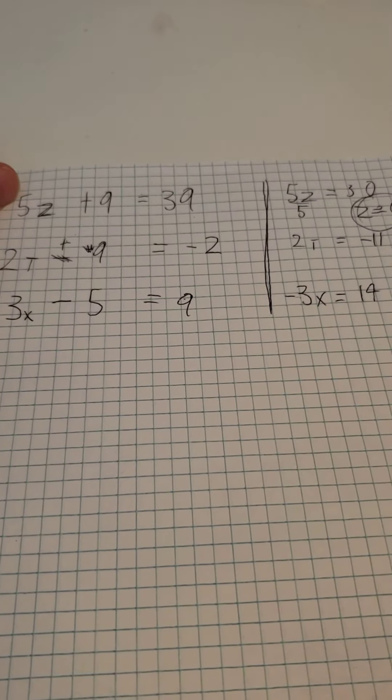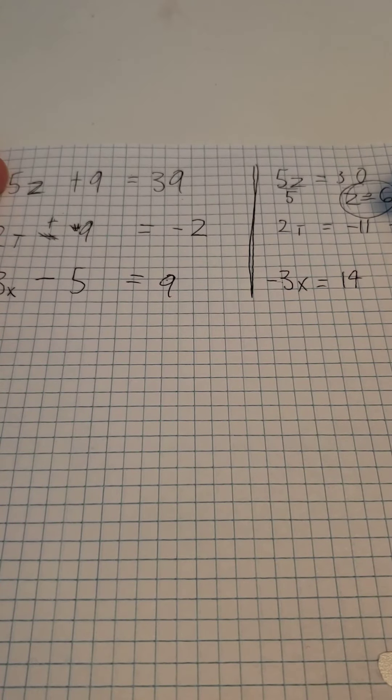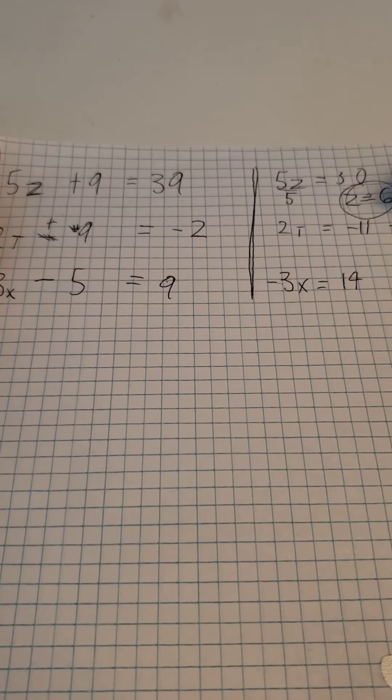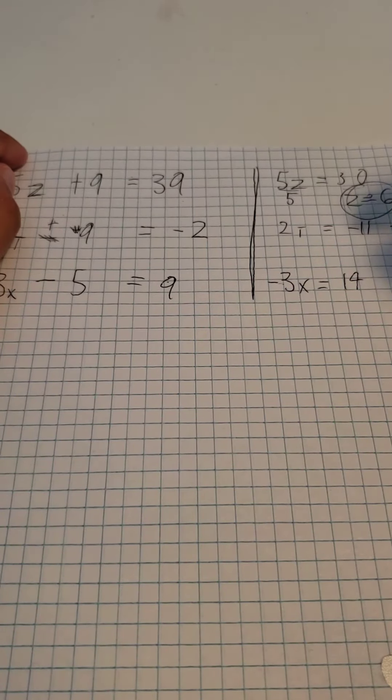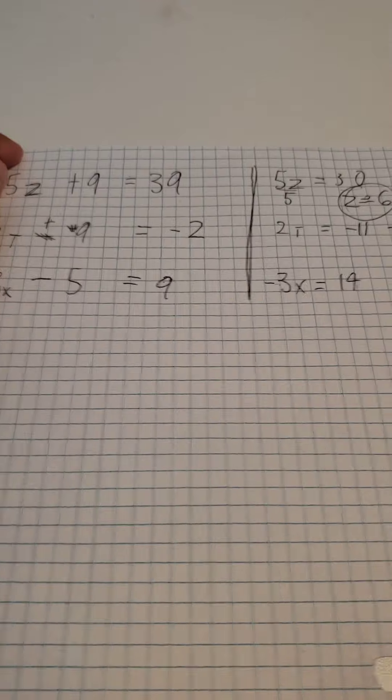Divide 14 by 3. And since it will not be a full number, it will be a repeating or a decimal, I'm just going to leave it as x equals 14 divided by negative 3, which is also a feasible solution.